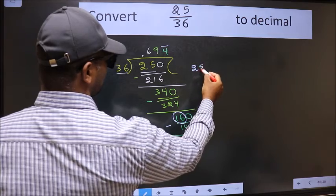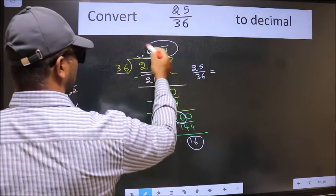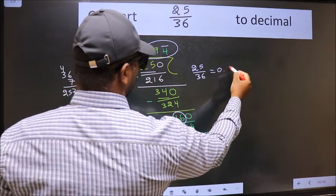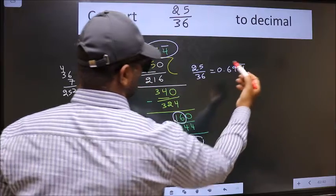Therefore decimal of 25 by 36 is this one. 0.694. Bar on this number is our answer.